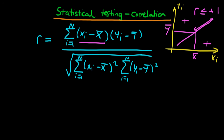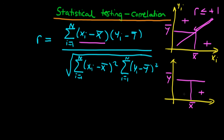Now let's think about the circumstance where there is no correlation between our two data sets. If we were to fit a line and it looks roughly flat, and we have our x-bar and y-bar, then it doesn't matter whether x is above its mean or below its mean — it's not necessarily the case that y_i minus y-bar is either positive or negative. So in this circumstance these two expressions are roughly going to cancel one another out and we're going to get r being approximately 0.